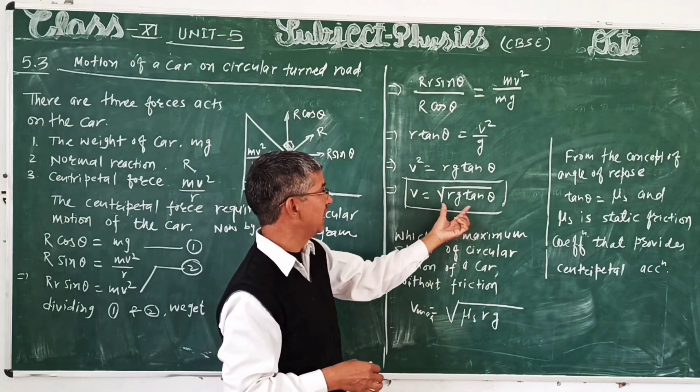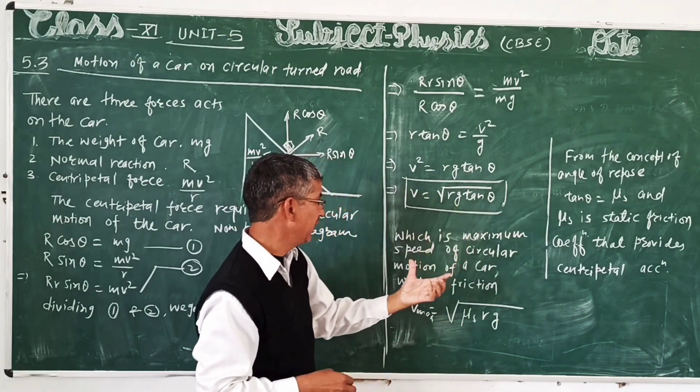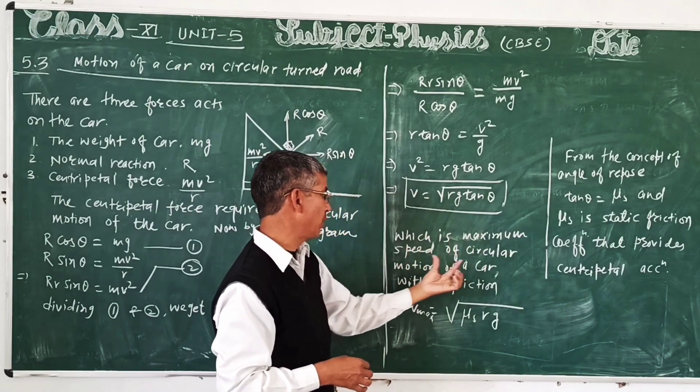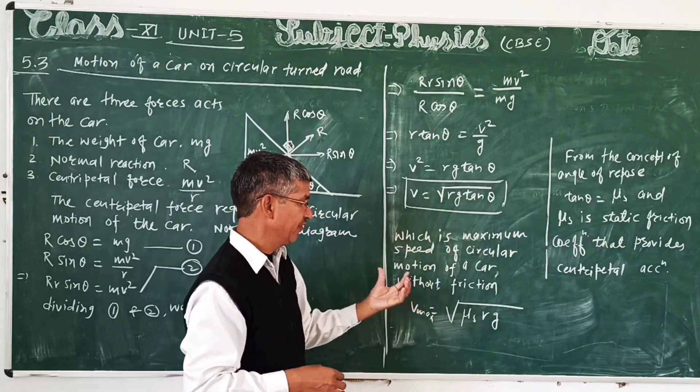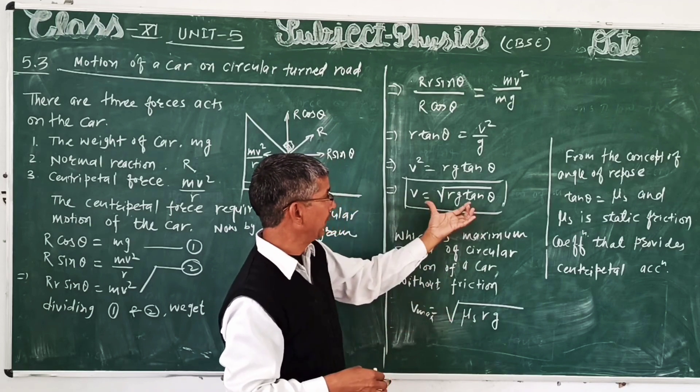This is the maximum speed of circular motion, that is the car without friction. This is the speed that the car needs to maintain for efficient circular motion.